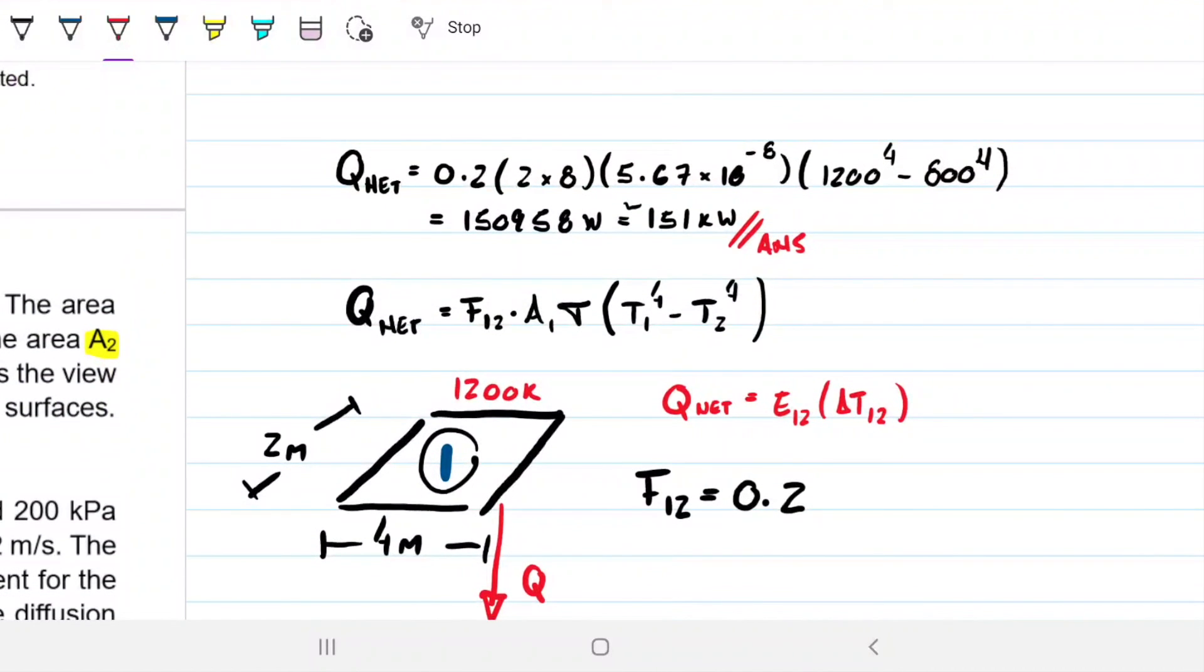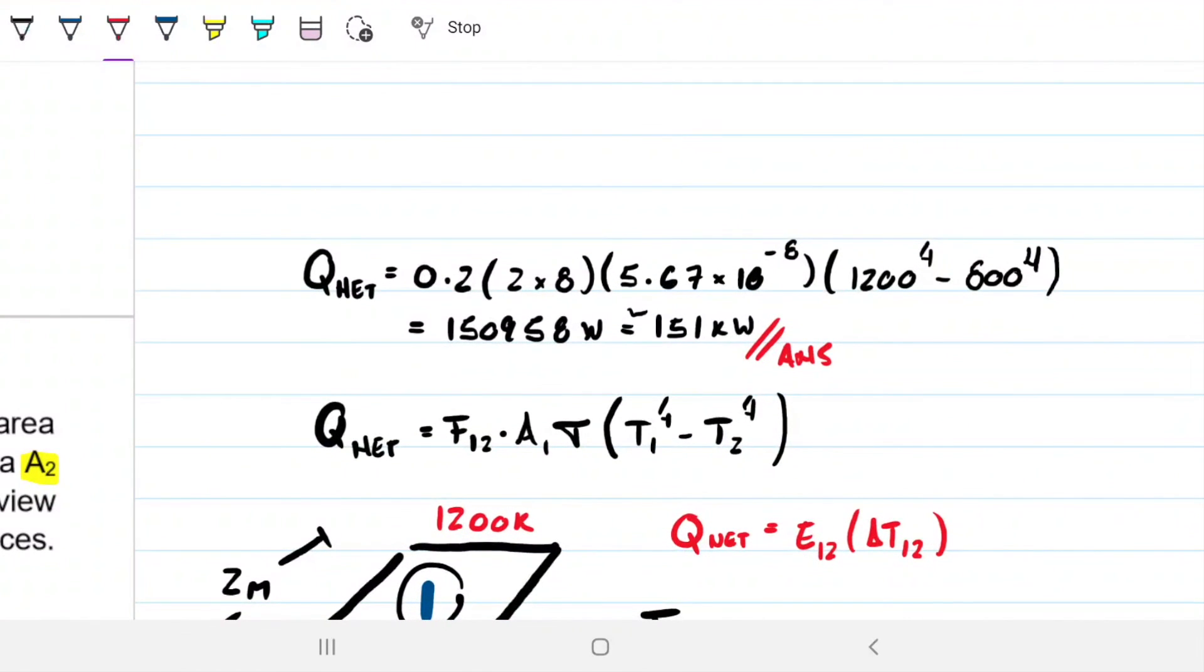We might want to check our units here. The view factor doesn't have any units, dimensionless. It's a ratio. Then we have 2 meters times meters, so we're going to get meters squared from these two guys. Then we have watts per meter squared Kelvins to the fourth. And then we have the difference between two Kelvins to the fourth. So unit wise, these guys go away, and then these guys go away, and we're left with watts, which is what we have here. So all good.